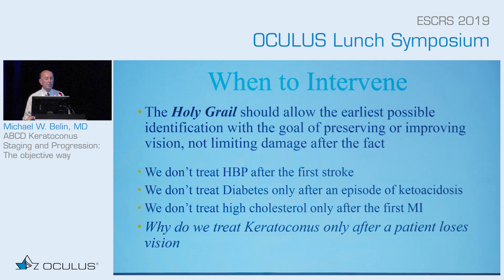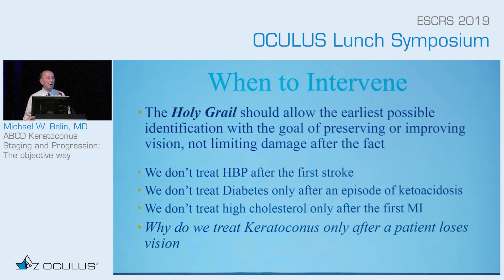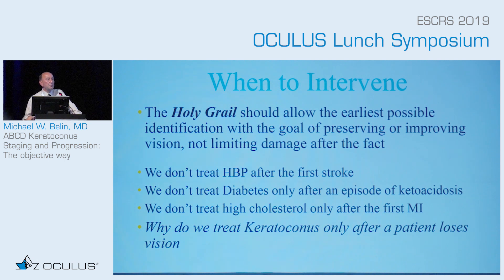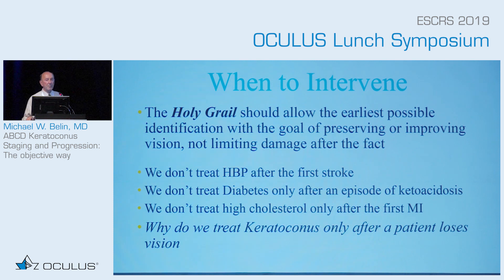So what is the holy grail? The holy grail for progression should allow us: one, the earliest identification of disease, and two, the ability to intervene before we lose vision. If you think about the rest of medicine — high blood pressure, we don't treat it only after the first stroke. We don't treat diabetes after the first episode of ketoacidosis. We don't treat high cholesterol after the first MI.